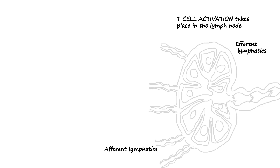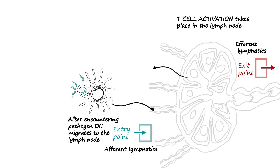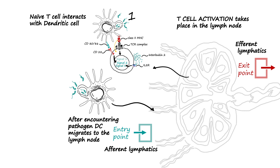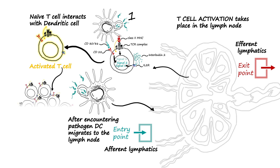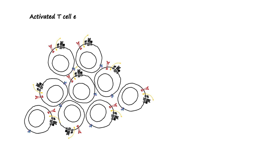T cell activation takes place in the lymph node. The lymph node has afferent and efferent lymphatics — afferent means the entry point and efferent means exit. Dendritic cells recognize pathogens in the periphery and migrate to the lymph node, where T cells are physically located, in dedicated areas separate from B cells. Once T cells are activated, they rapidly proliferate and increase their numbers through a process known as clonal expansion.